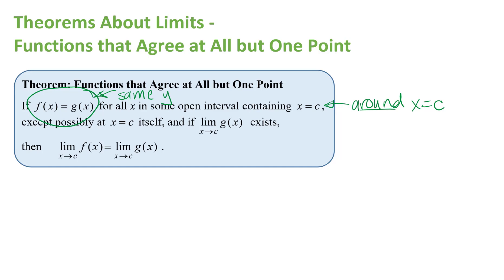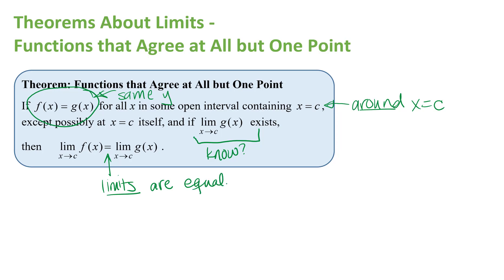The second part of the theorem says if the limit as x approaches c of g of x exists — a limit that we know or can figure out using some other means — then the conclusion is that the limit as x approaches c of f of x equals the limit as x approaches c of g of x. This theorem says these two limits are equal; it doesn't mean the functions are equal.